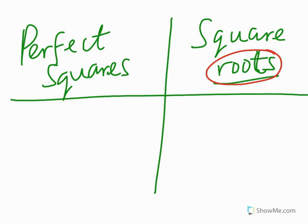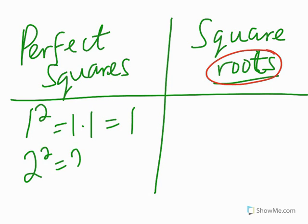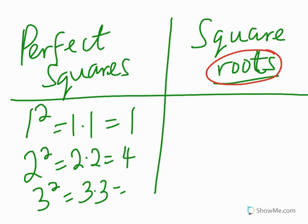So if we start with 1: 1 squared means 1 times 1, which is 1. 2 squared means 2 times 2, which is 4. Raise the base to exponent 2. 3 squared means 3 times 3, which is 9.